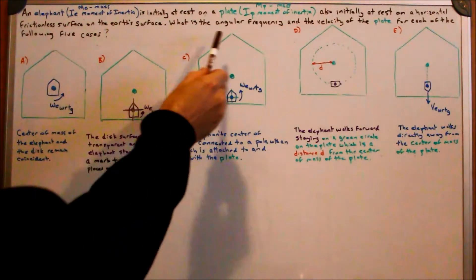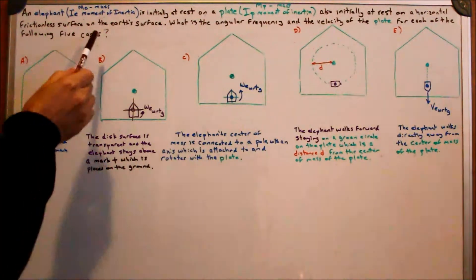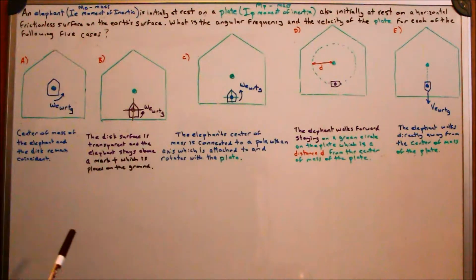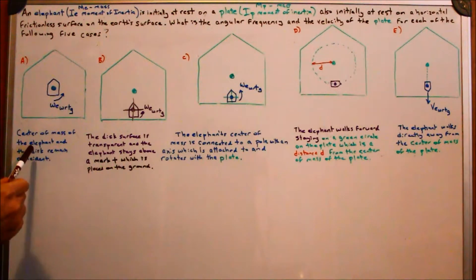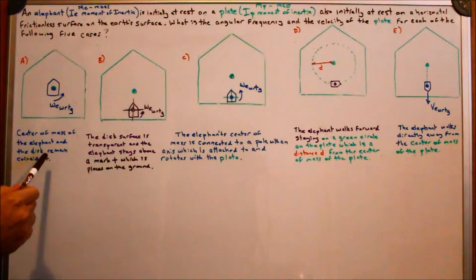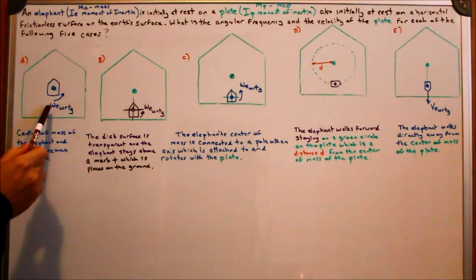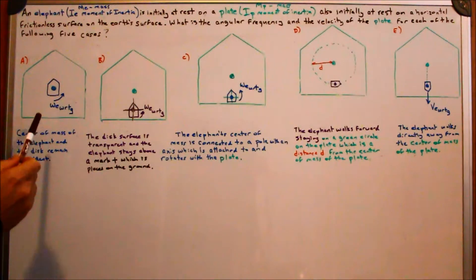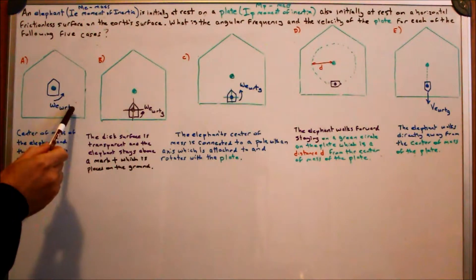The question is: what is the angular frequency and the velocity of the plate for each of the five following cases? Case A: the center of mass of the elephant and the disc are coincident at the beginning and they stay coincident the entire time, and the elephant rotates about its own center of mass with angular frequency omega sub e, and this is with respect to ground.